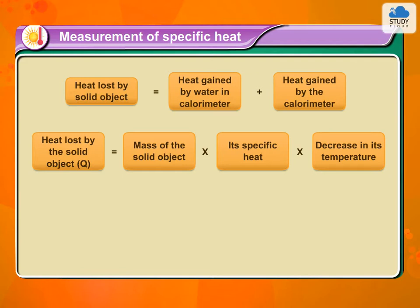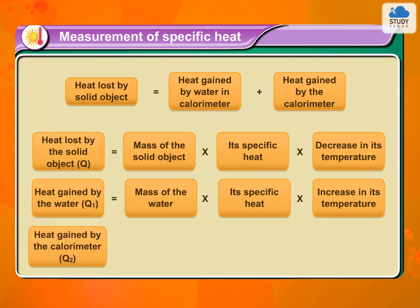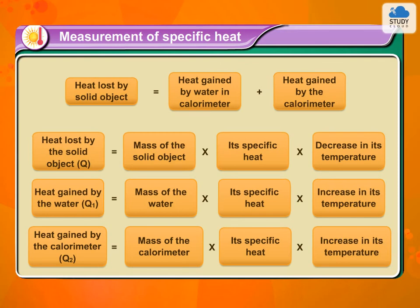Similarly, heat gained by the water Q1 is equal to mass of the water into its specific heat and increase in its temperature. Heat gained by the calorimeter Q2 is equal to mass of the calorimeter into its specific heat into increase in its temperature.